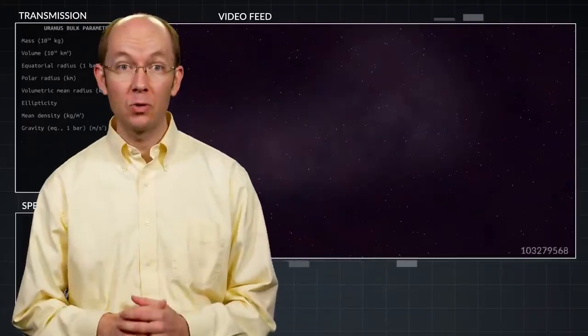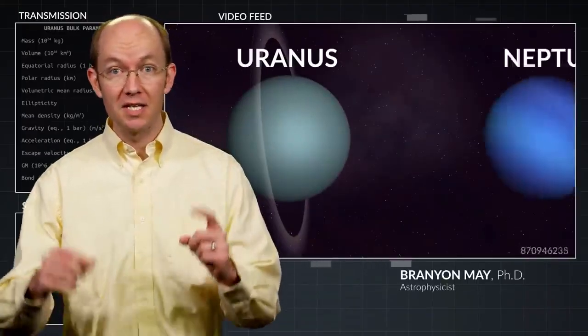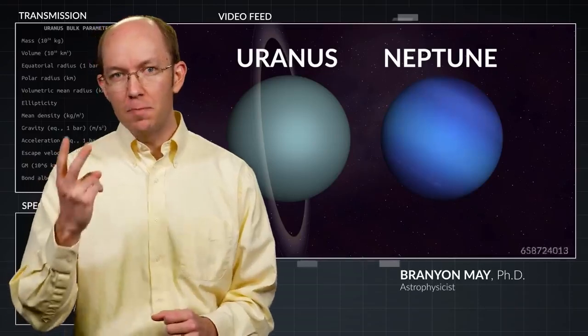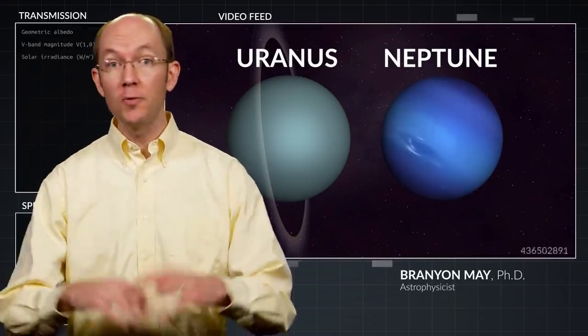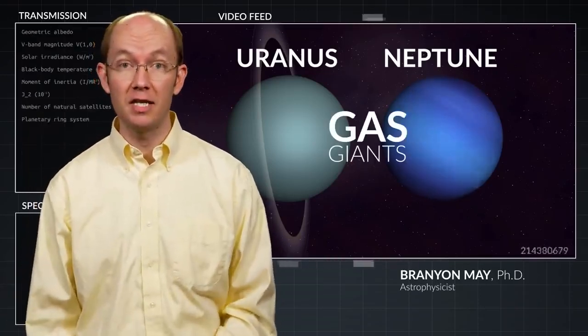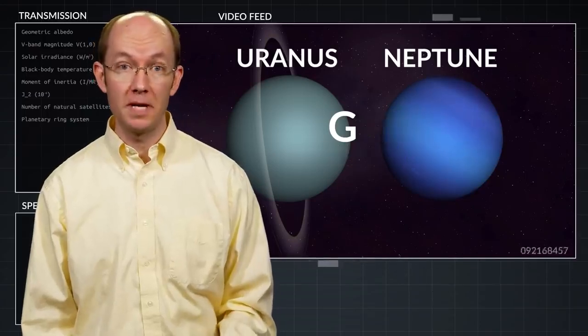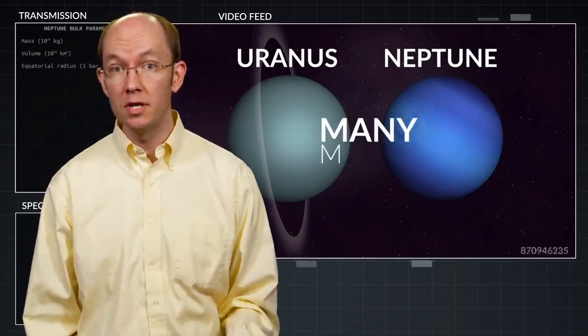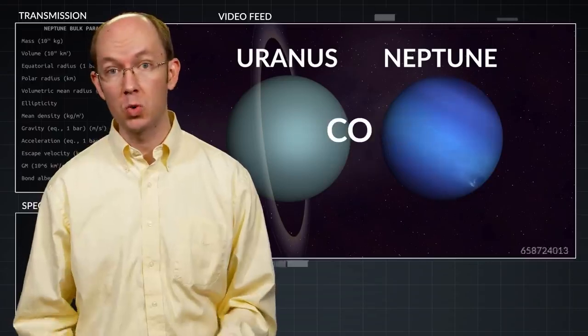The last two planets in our outer solar system are Uranus and Neptune. These two planets are very similar. Both planets are classified as gas giants. They have similar overall appearances, have many moons, faint rings, and are very cold.